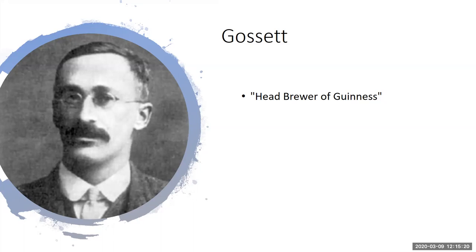Gossett was employed by Guinness to really maximize their production of beer. Guinness was a forward-thinking company and they hired him to figure out how to deal with the fact that their crops were coming in at a different rate than in the past. They wanted to test the quality of the crops for beer without sacrificing all of the product just to be testing.